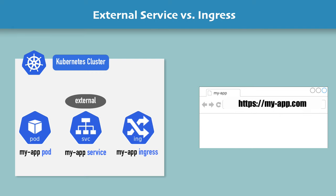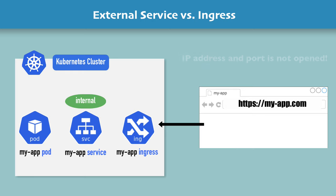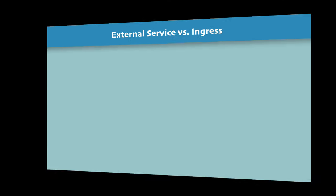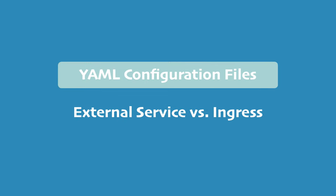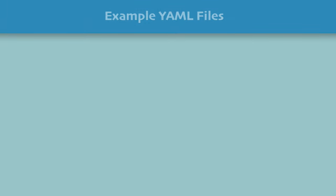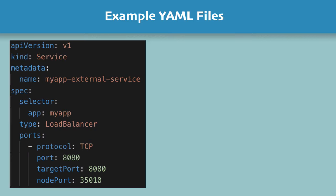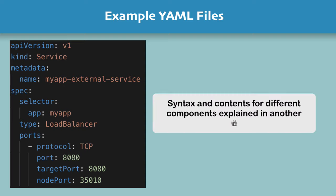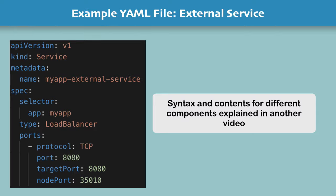So you'll have my app ingress, and instead of an external service, you would have an internal service. You would not open your application through the IP address and port. When a request comes from the browser, it will first reach the ingress, which will then redirect it to the internal service, and it will eventually end up at the pod. Let's take a look at how the external service configuration looks so you have a practical understanding. If you want to know more details about how YAML files are written and what the syntax looks like for different components, I have a separate video you can check out.